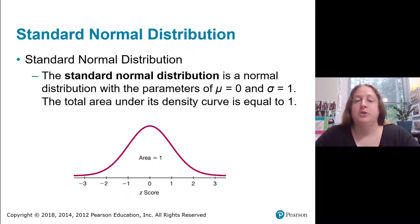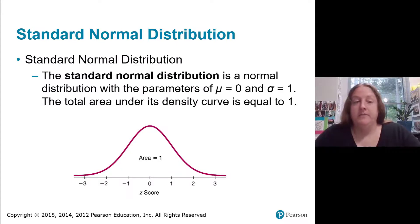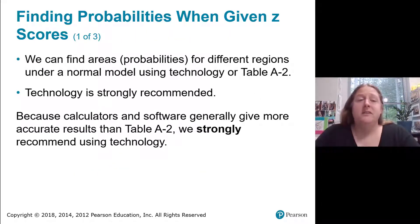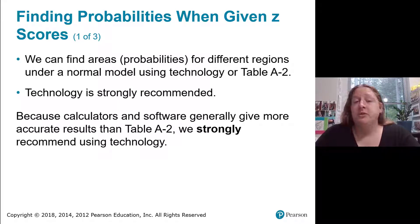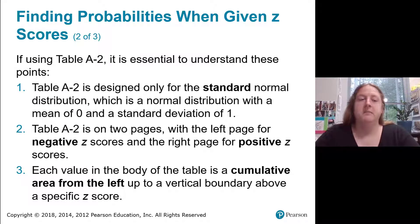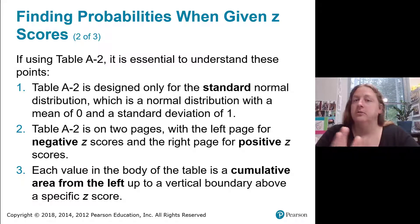Going back to the standard normal distribution. We learned from the uniform distribution that the area under the density curve equals one. What makes it a standard normal distribution is that it's a normal bell shape, the mean is 0, and the standard deviation is 1. We can find areas for different regions under a normal curve using technology or table A2. Technology can be slightly more accurate, but the table is accurate enough most of the time. The table is designed only for the standard normal distribution — mean of 0, standard deviation of 1.